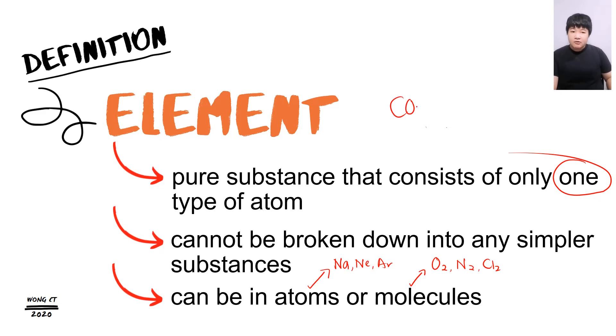How about carbon dioxide? Carbon dioxide is a molecule, as we know. But is carbon dioxide an element? What do you think? Element must only have one type of atom. But in carbon dioxide, we have two types of atoms. We have one carbon atom. We have two oxygen atoms. So we have two types of atoms. So is carbon dioxide still an element? No. Carbon dioxide is not an element.